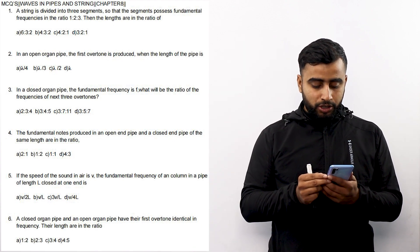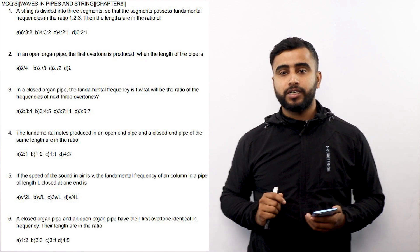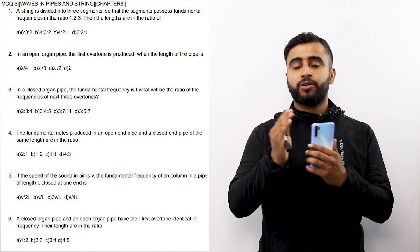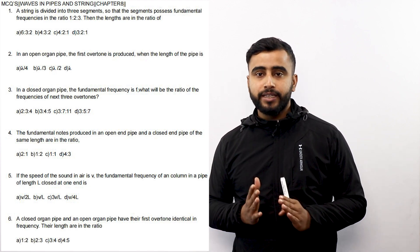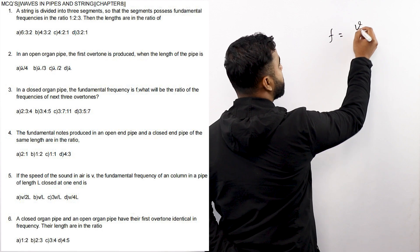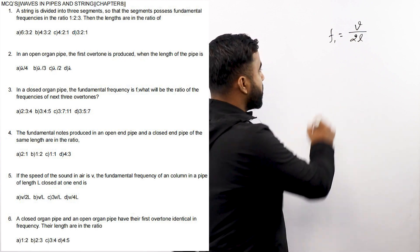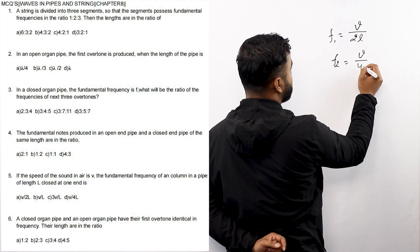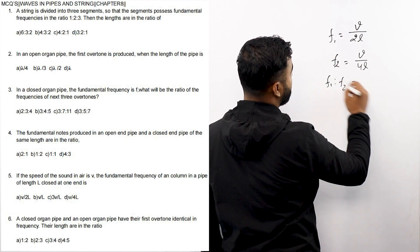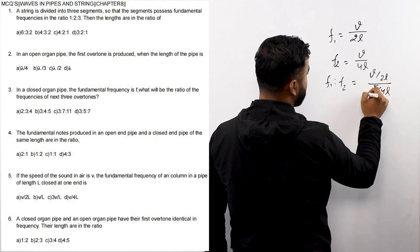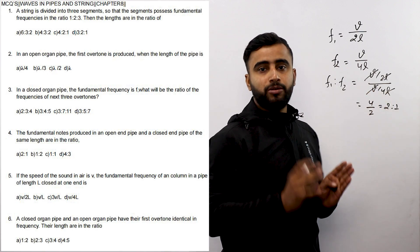Question number 4: The fundamental frequencies produced in an open pipe and a closed pipe of the same length are in what ratio? For an open organ pipe, the fundamental frequency is V divided by 2L, and for a closed organ pipe it is V divided by 4L. So F1:F2 equals (V/2L) divided by (V/4L). V and L cancel, giving 4/2, which equals 2:1. That is the correct answer.